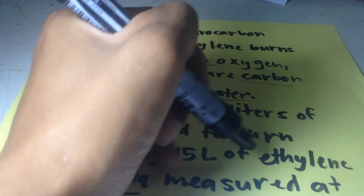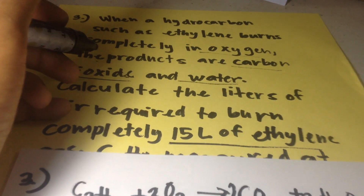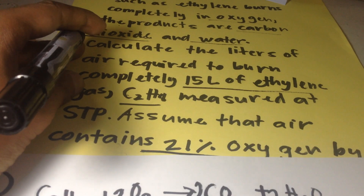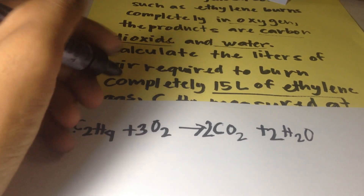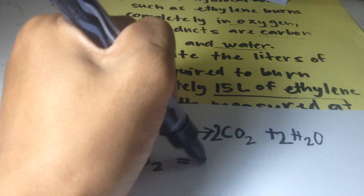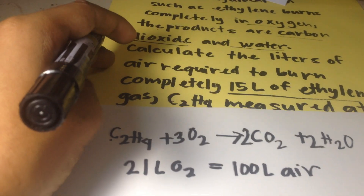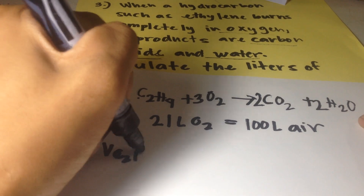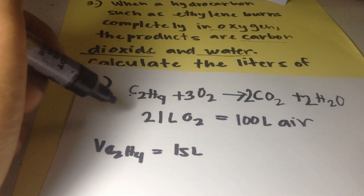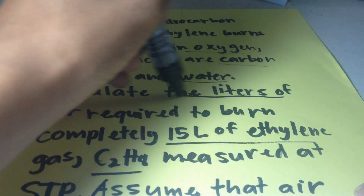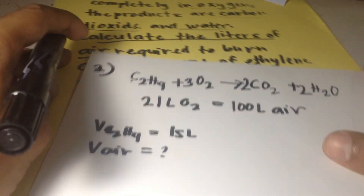The given information is: we have a volume of 15 liters of ethylene, and air contains 21% of oxygen by volume. We need to write a ratio first. So 21 liters of oxygen gas equals 100 liters of air. The volume of C₂H₄ is 15 liters. The unknown we need to find is the volume of air.